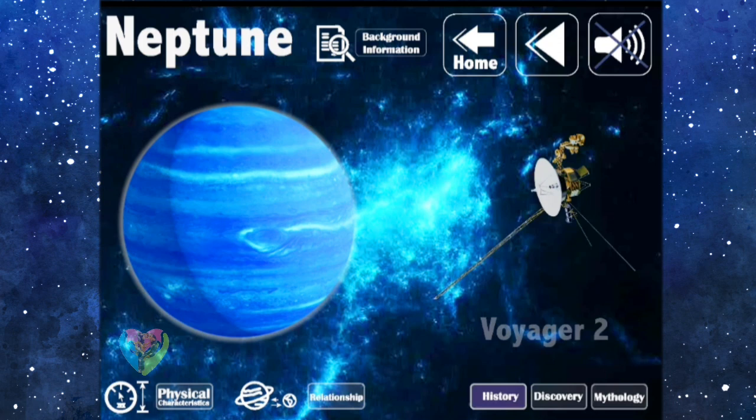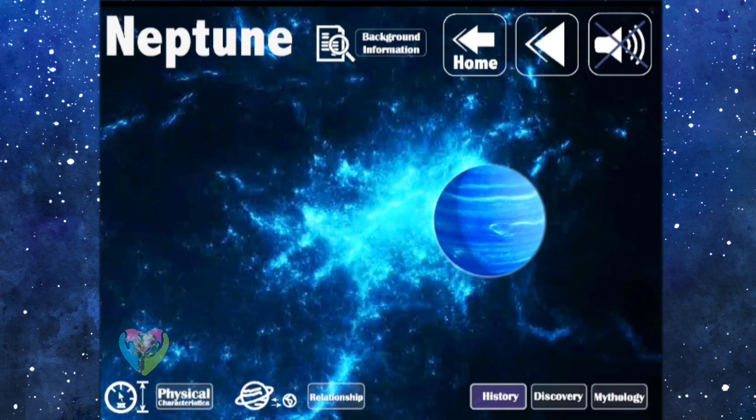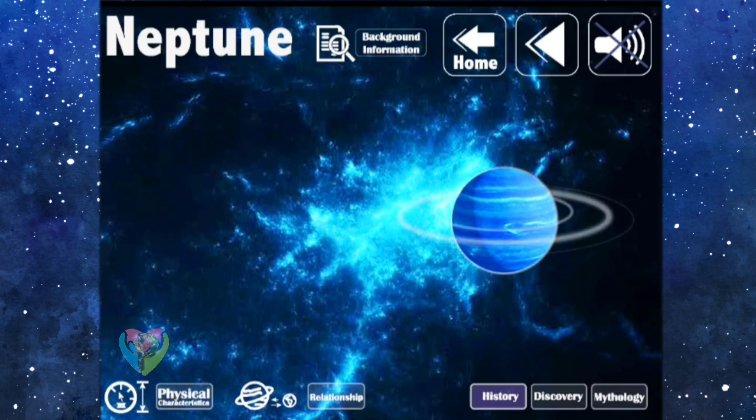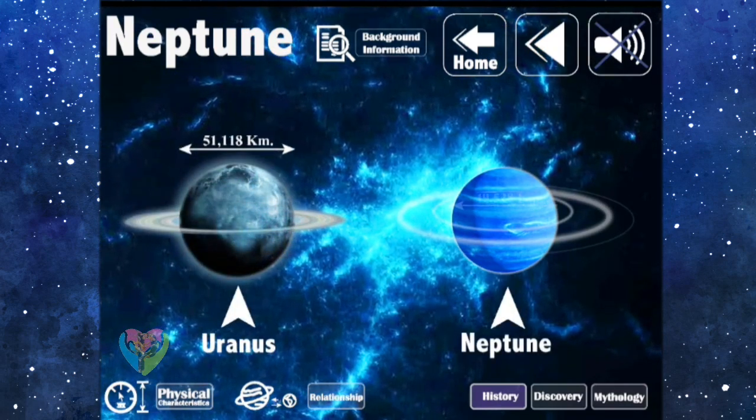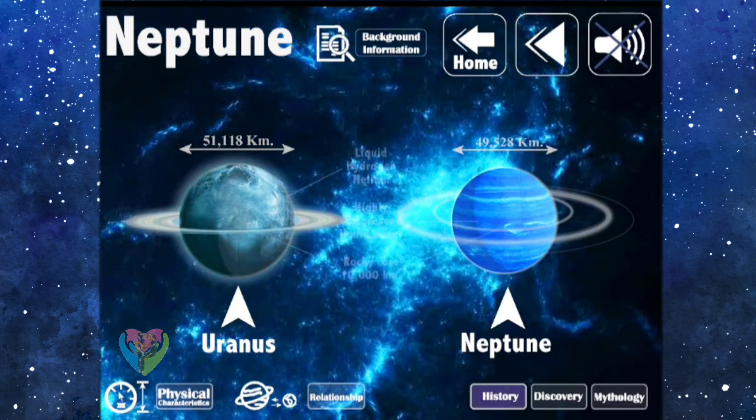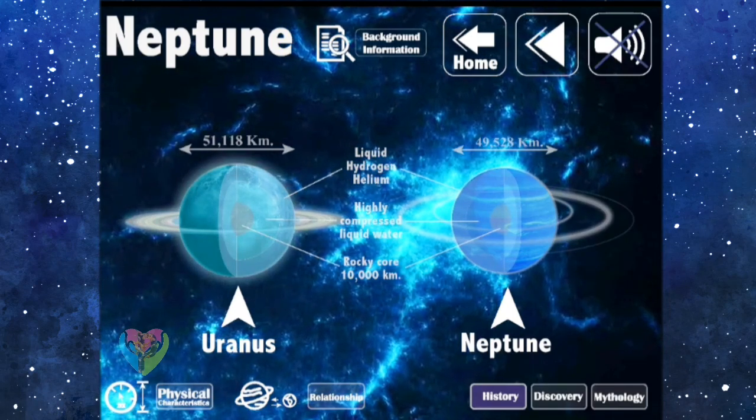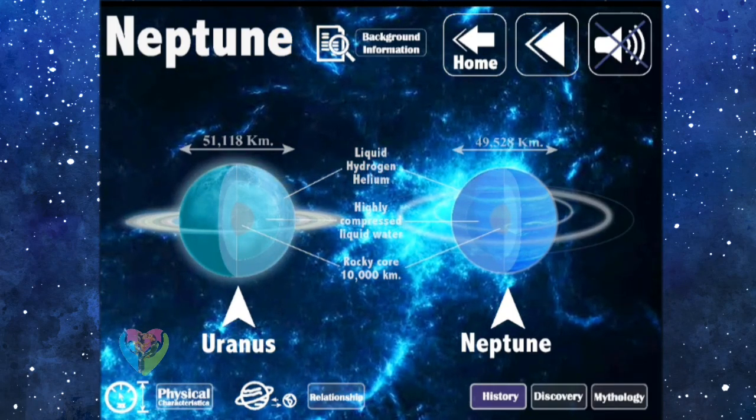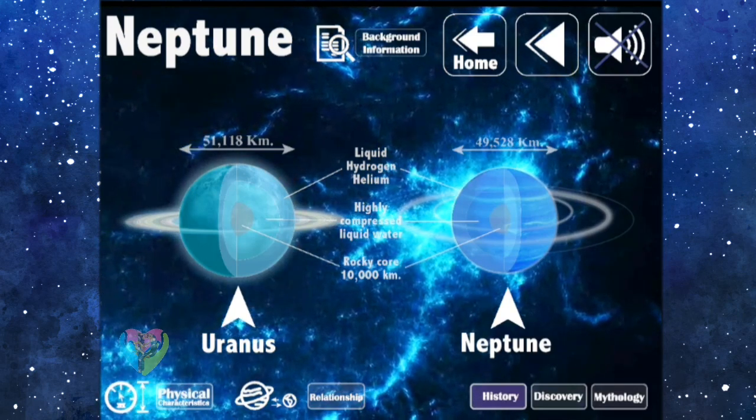Neptune shares similar characteristics to Uranus, such as being seen from the telescope as a blue planet. It has a high density atmosphere containing mostly hydrogen and helium with some methane and hydrocarbons. Because methane in the upper atmosphere absorbs red light and reflects blue light, we see Neptune as a blue planet like Uranus.